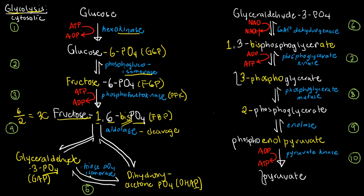In step five, triose phosphate isomerase interconverts GAP and DHAP. Mutases and isomerases like this interconvert molecules that differ only in the position of a substituent. This is parallel to glucose and fructose: GAP has an aldehyde group and DHAP has a ketone, so they can interconvert into one another thanks to this enzyme. This is very important for reasons I will explain later.